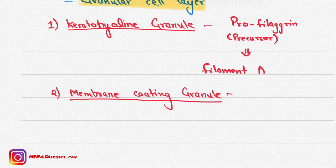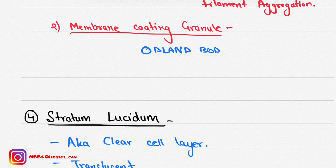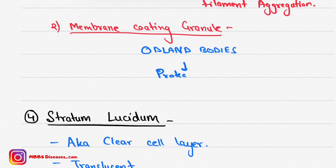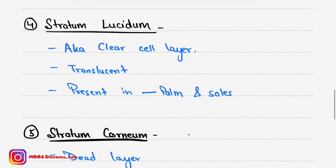The second type of granules in stratum granulosum are membrane coating granules, also known as Odland bodies. These are lipid-based and form a protective barrier.